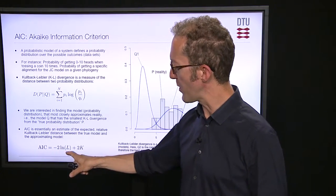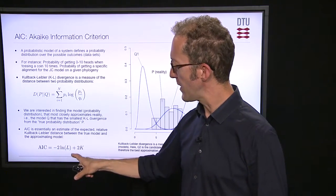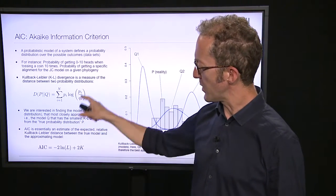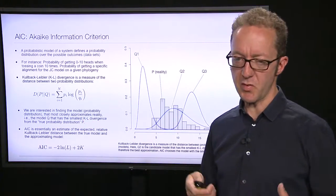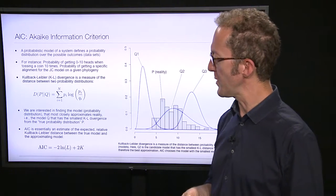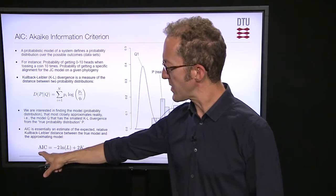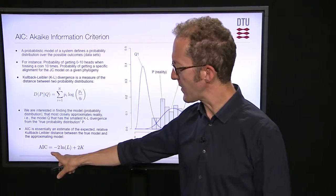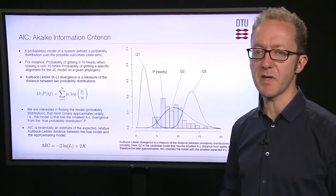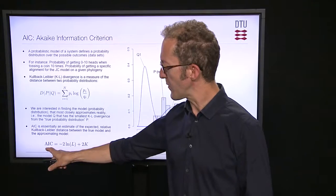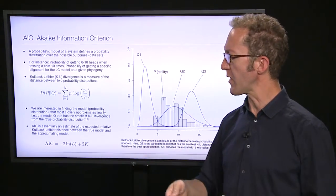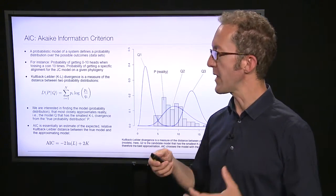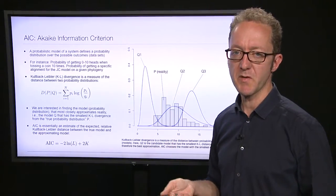AIC takes into account both the fit and the number of parameters. This measure is not just taken out of thin air — it's actually an estimate of the Kullback-Leibler divergence. In general, if you compute AIC for different models, the model with the smallest AIC will be the model that most closely approximates reality.